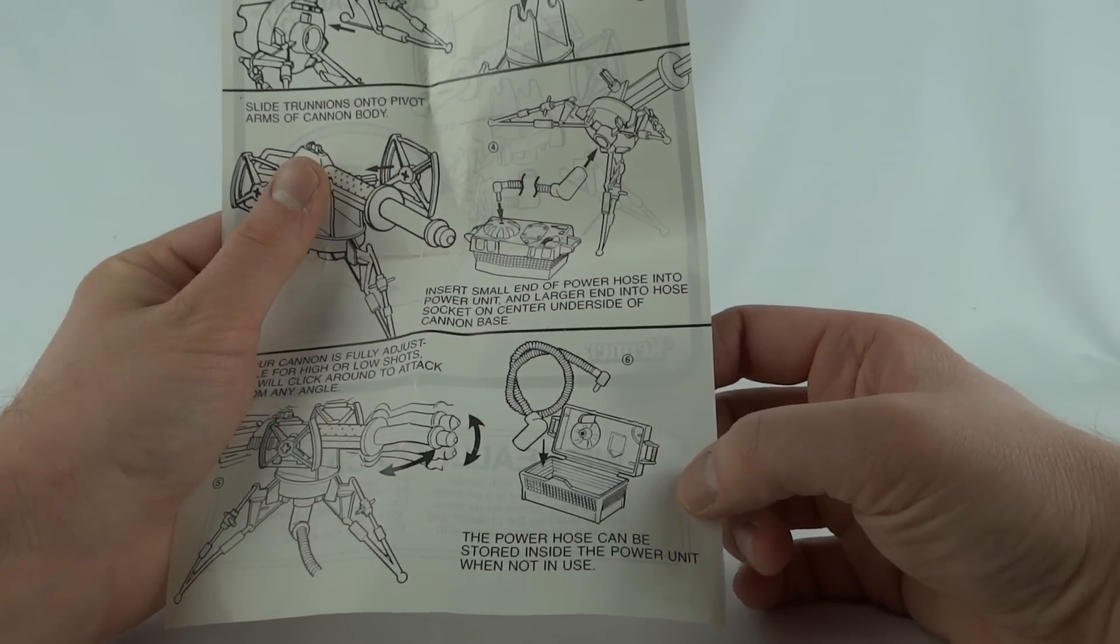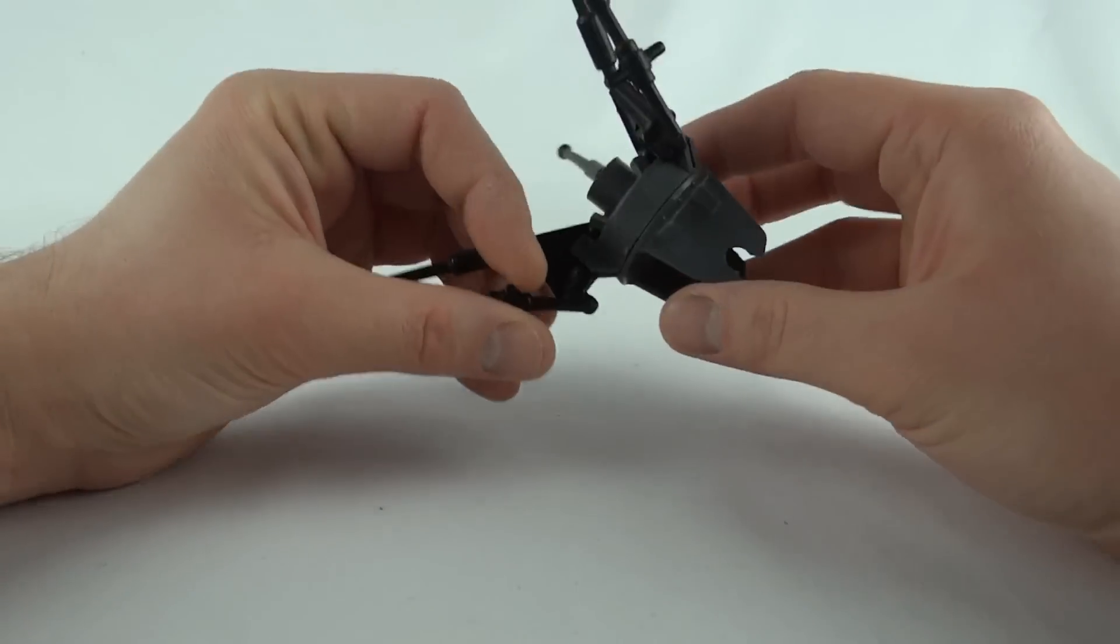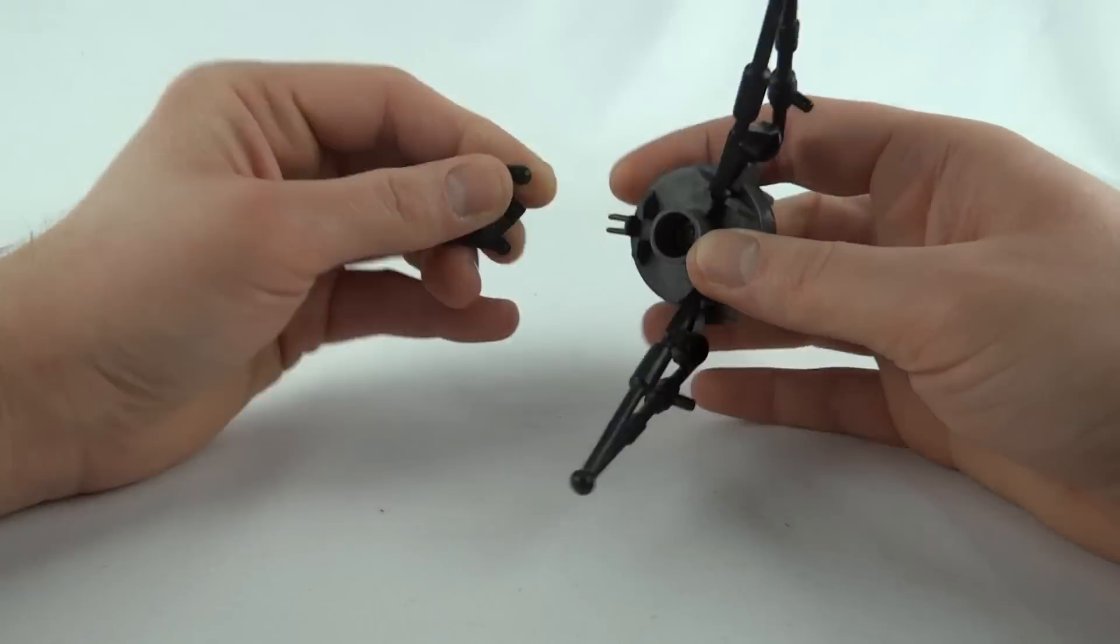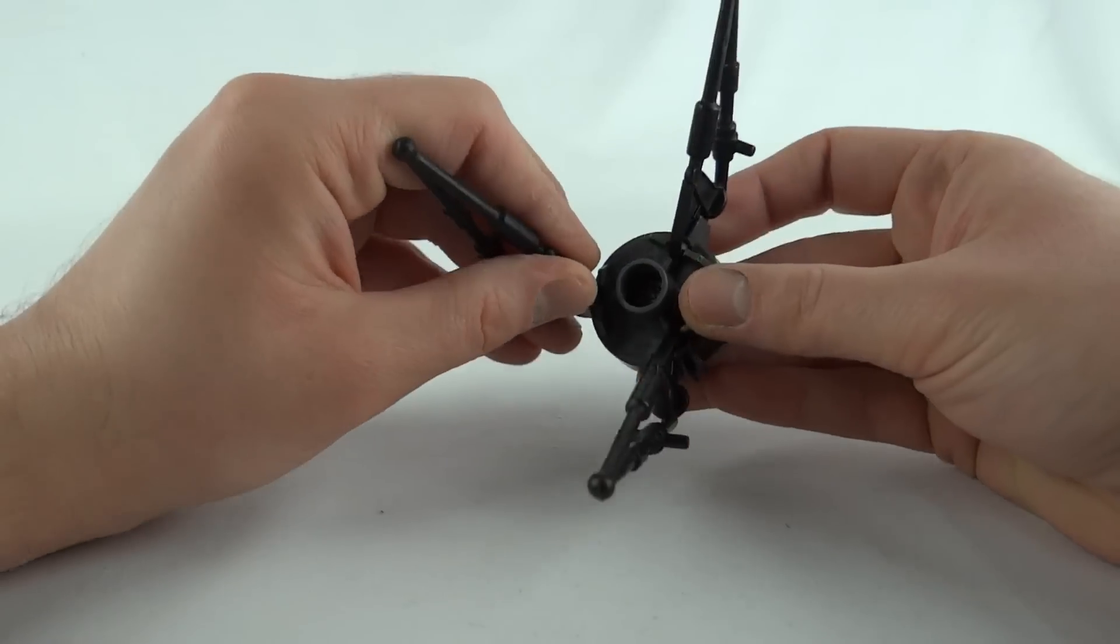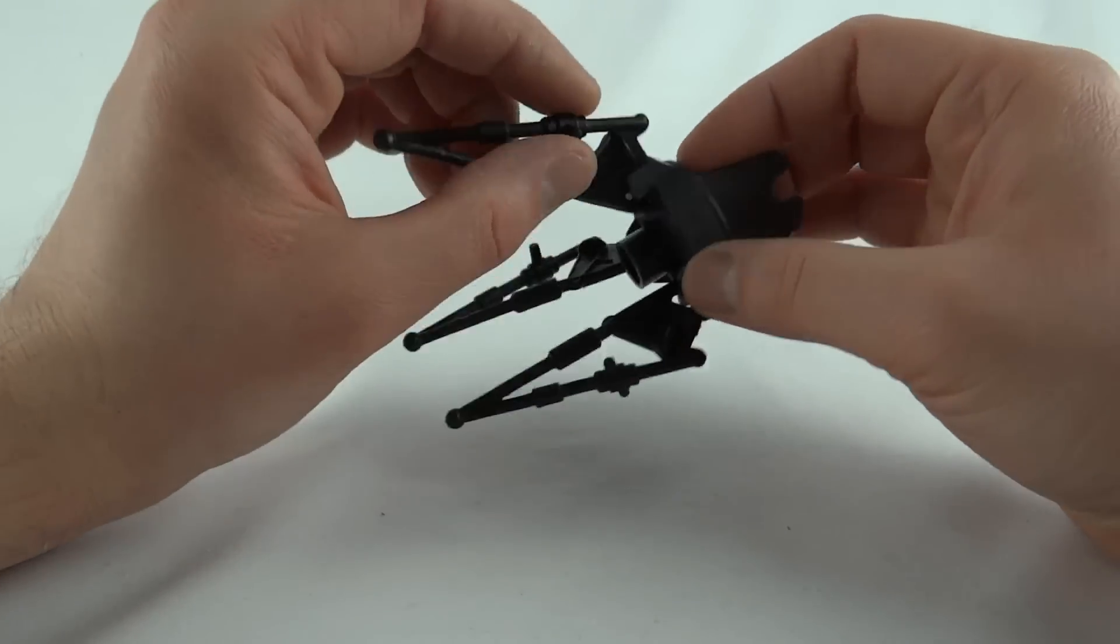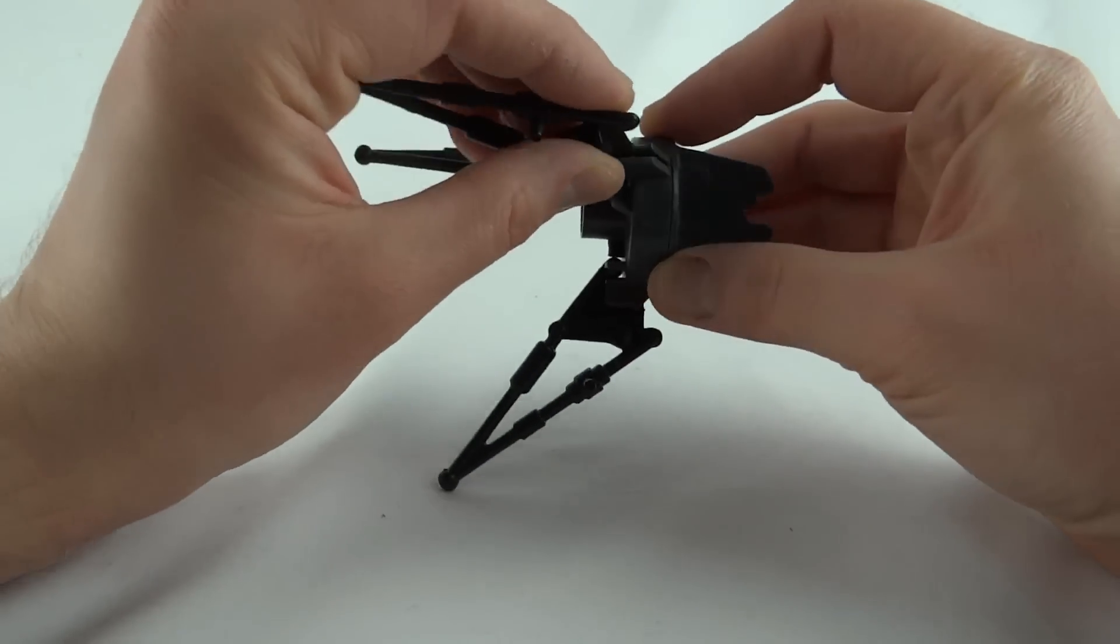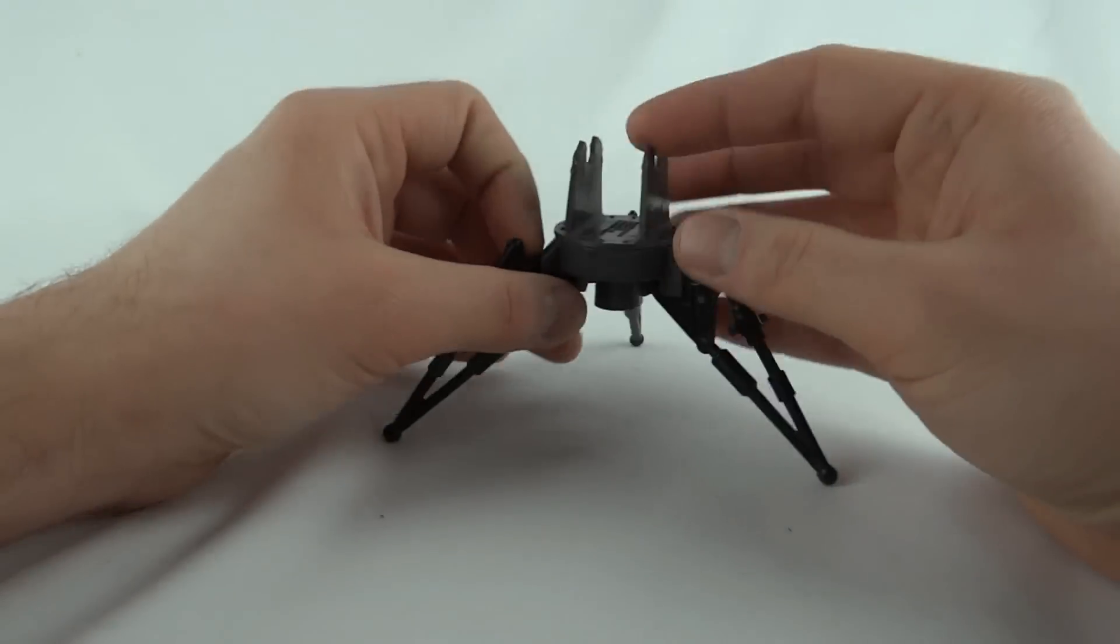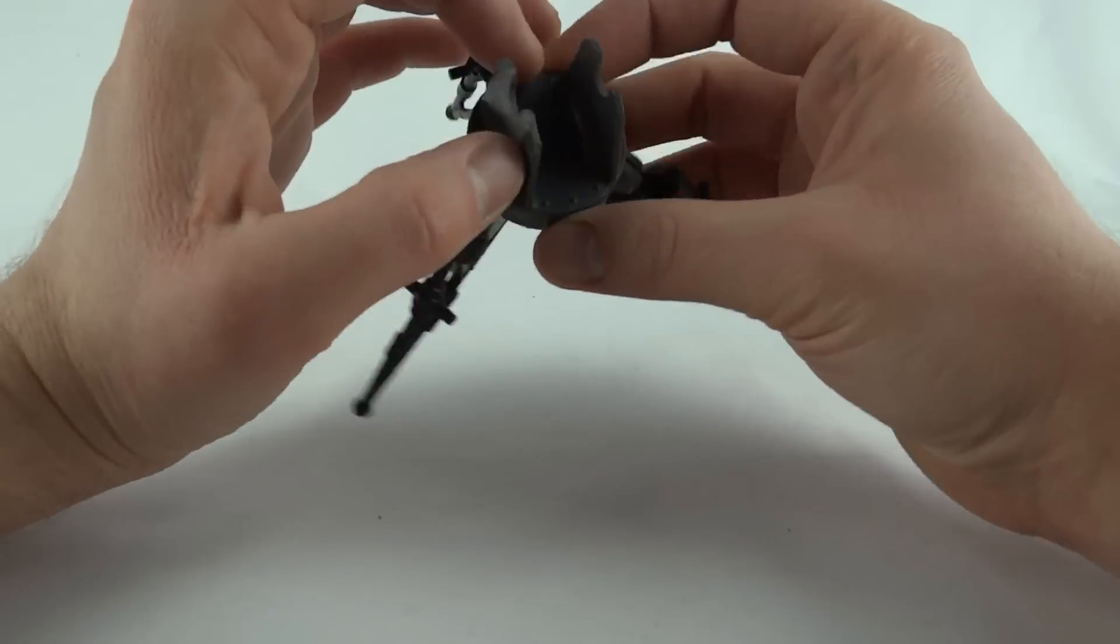This is the base for the cannon. It's got these three legs and the ball joints, and they just pop into there. You can fold them all up, you can slide them into these grooves, and when you do that it holds them all nicely in position.